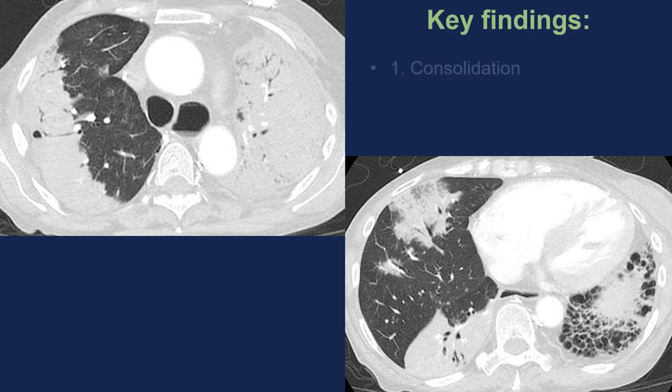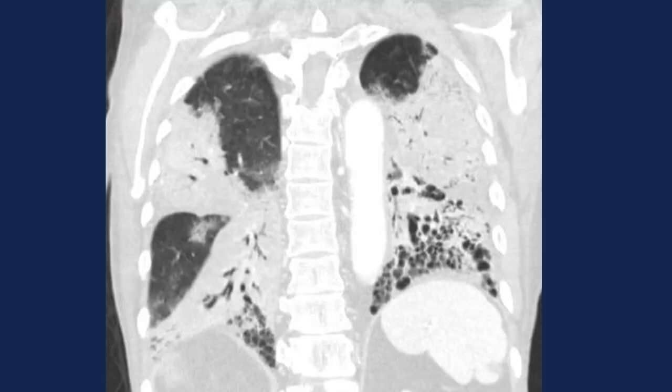The key findings in this case are consolidation as the main finding and some cystic lucencies, which were initially thought to be due to interstitial lung disease — she was on steroids for this interstitial lung disease. The coronal image demonstrates the cystic lucencies at the bases to better advantage, confirming all of the other findings.